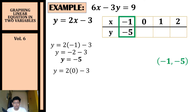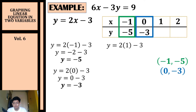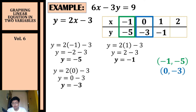Substituting x equals zero: y equals two times zero minus three, so y equals negative three — coordinate (0, −3). Substituting x equals one: y equals two times one minus three, so y equals negative one — coordinate (1, −1).